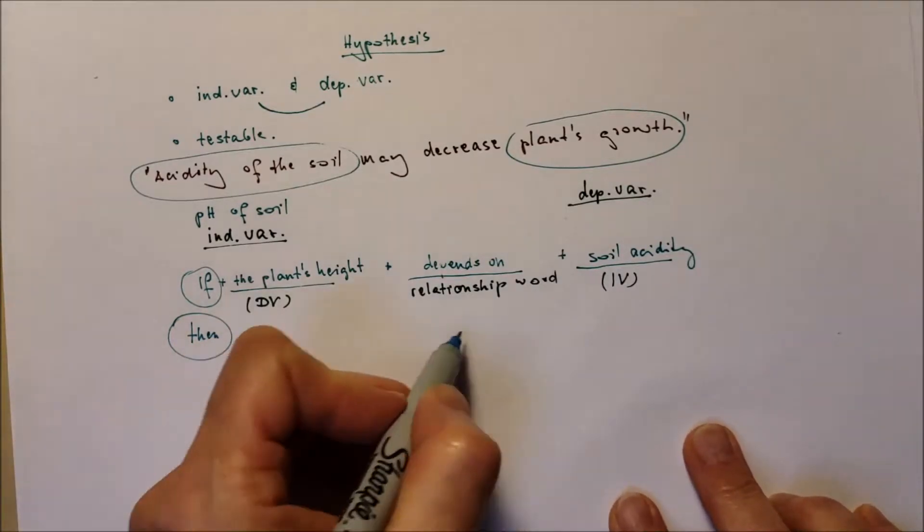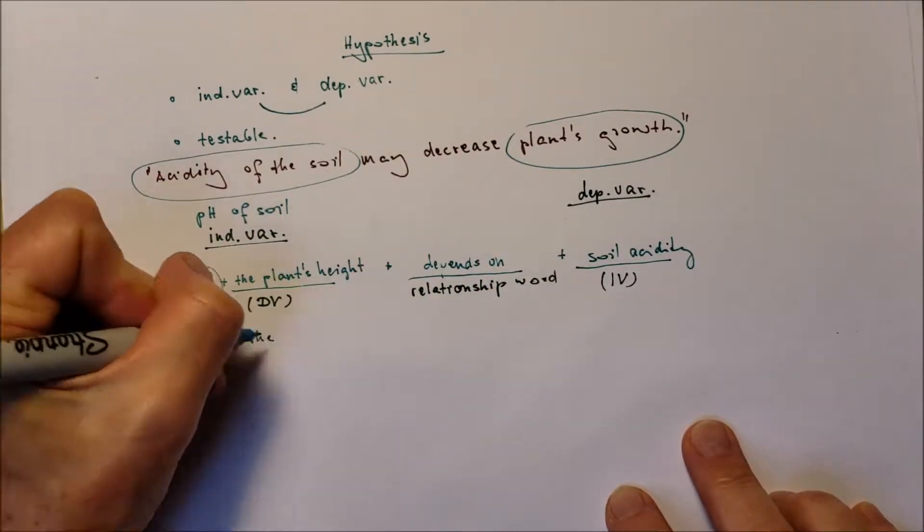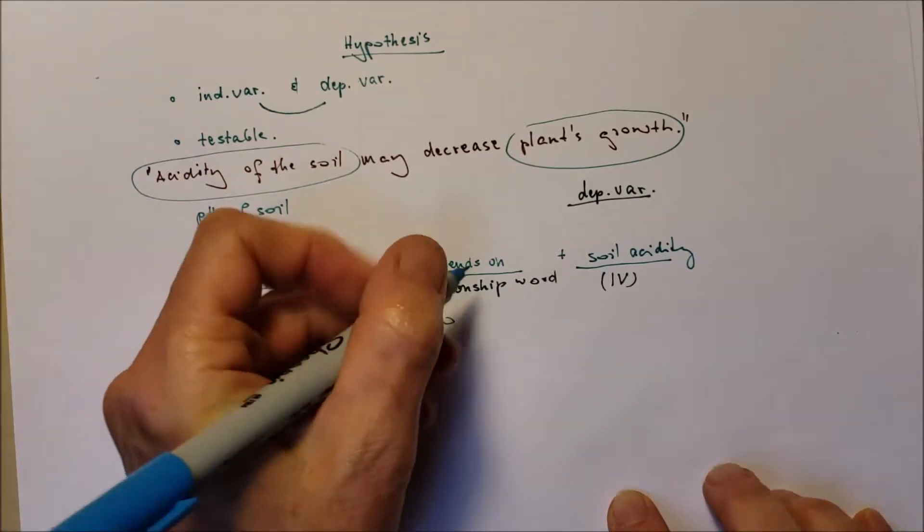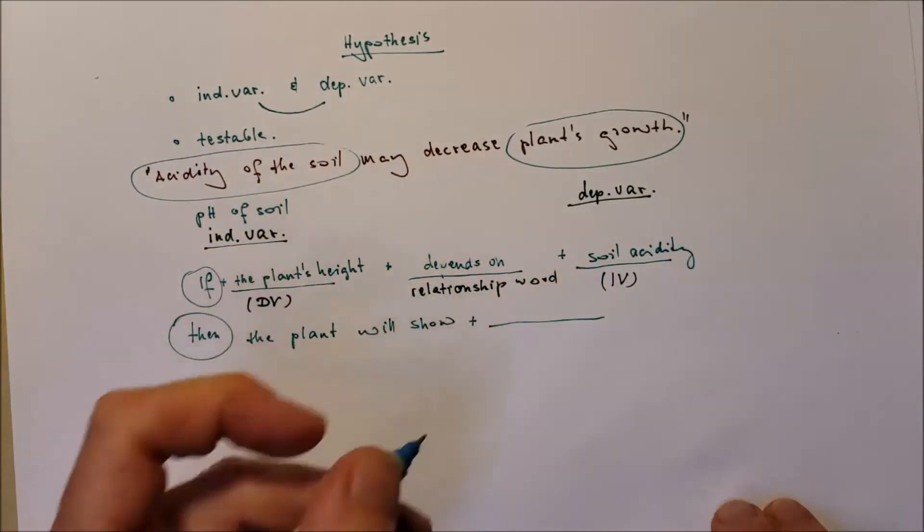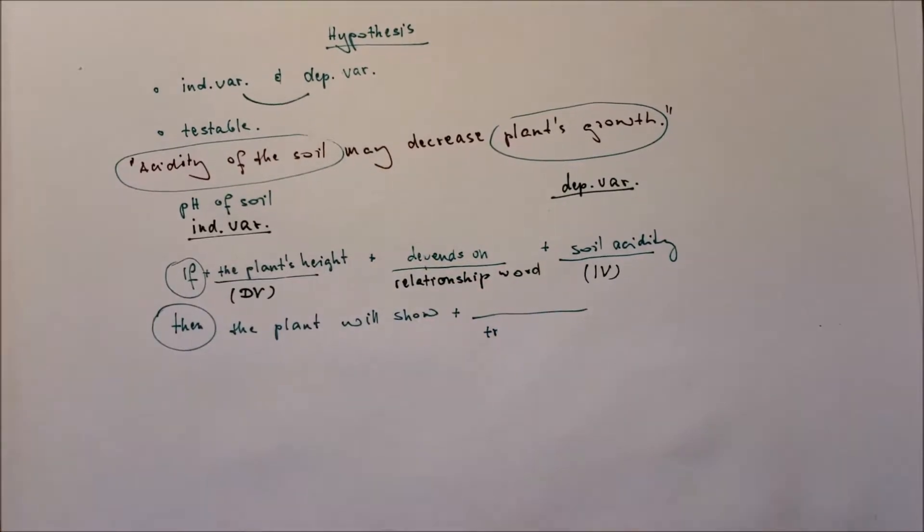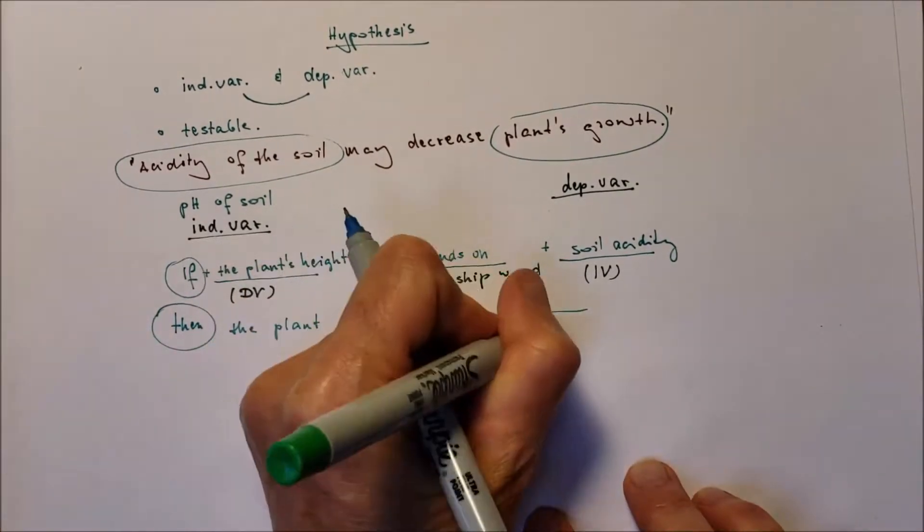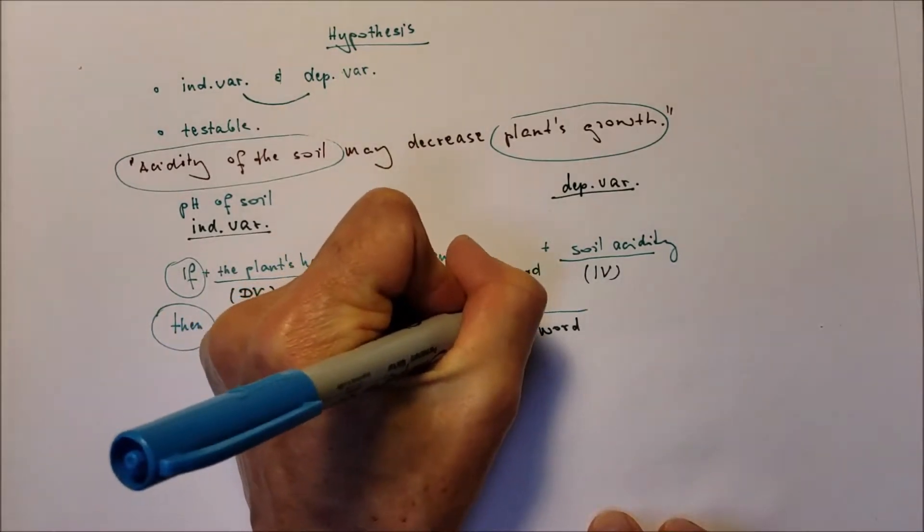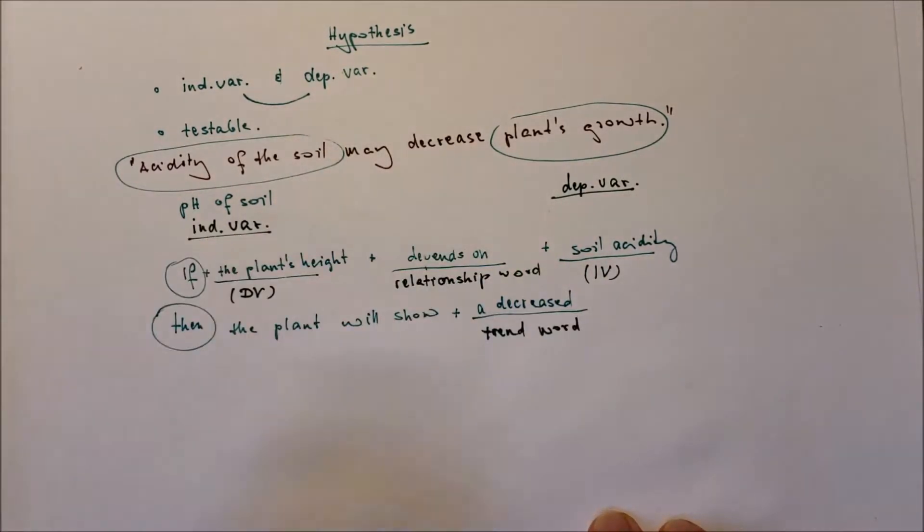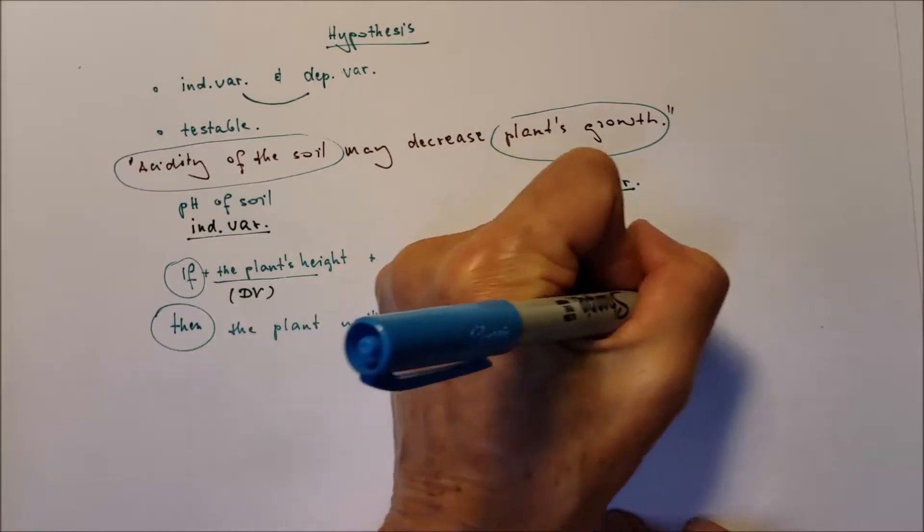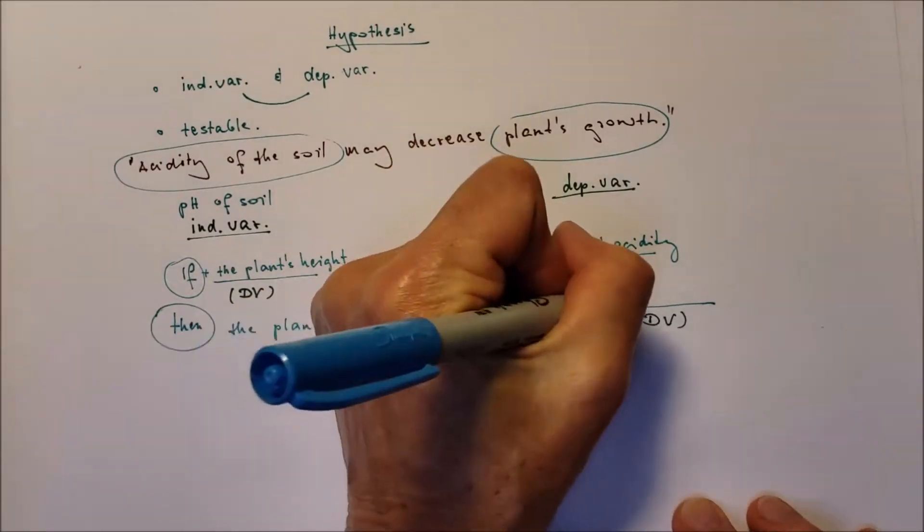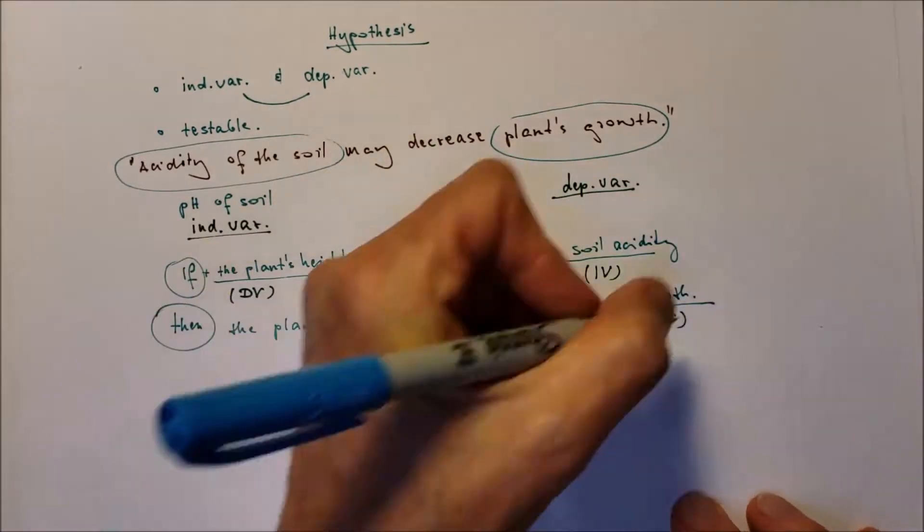The independent variable in this case is the soil acidity. Then the plant will show, the object will show, in our case, the plant. We use a trend word. The trend word can be increases, decreases, more, less. So we just add a decreased dependent variable. We will come here, the growth. So then the plant will show a decreased growth.